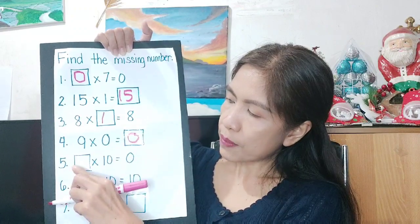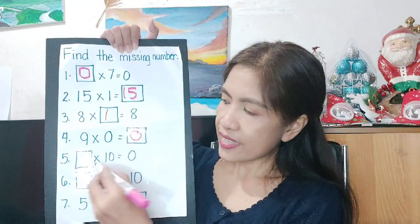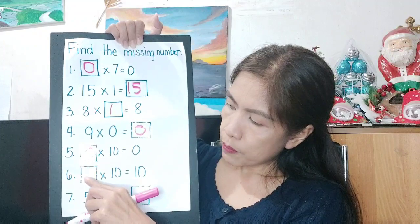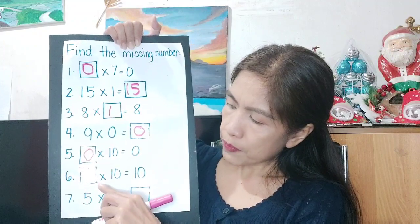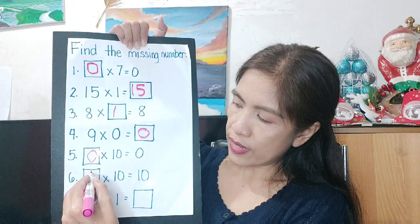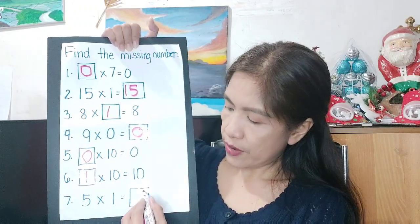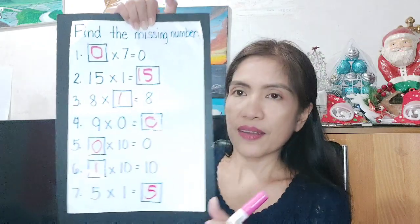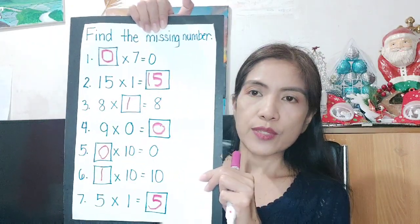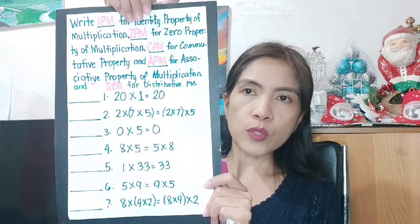Next drill item: blank times 10 equals 10 — the missing number is 1. And finally, 5 times 1 equals 5. That's the drill for items 1 to 7.